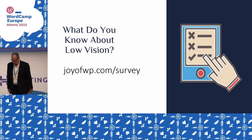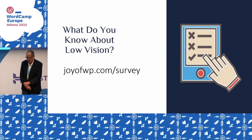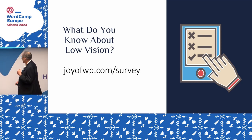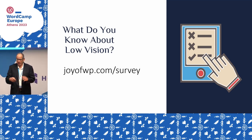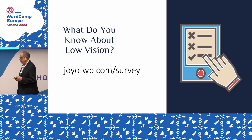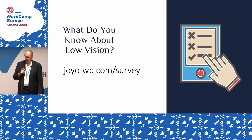We're going to start off with an interactive survey — I call it the IQ survey. There are four questions, and you should have gotten access to the web page on your cell phone because I have a QR code that should be circulating. I hope you'll take it — it's only four questions, it's not very long. If you don't have the QR code, you can go to joyofwp.com/survey.